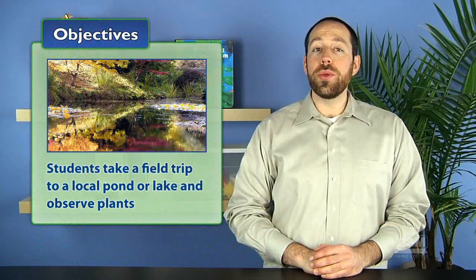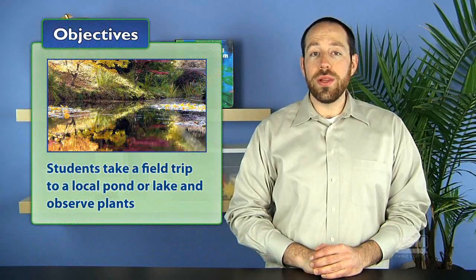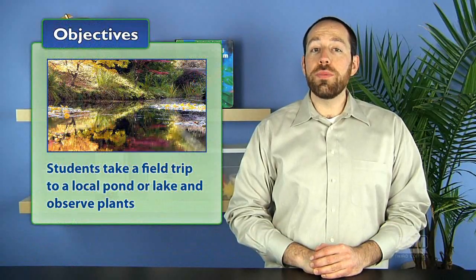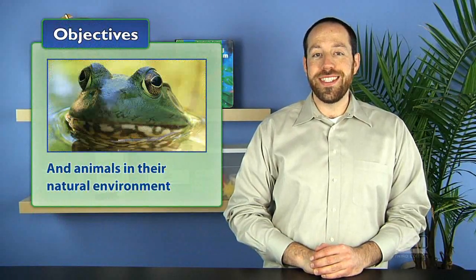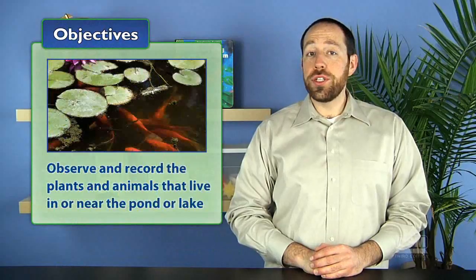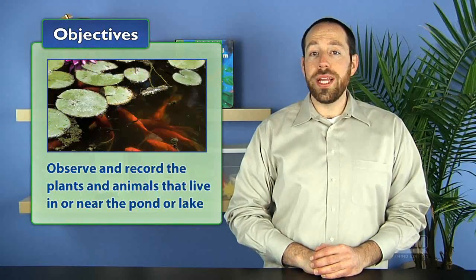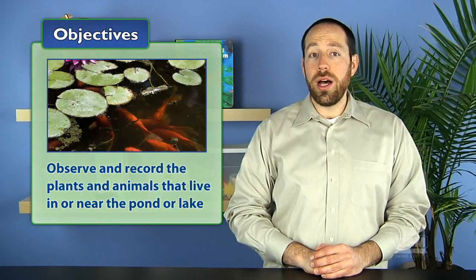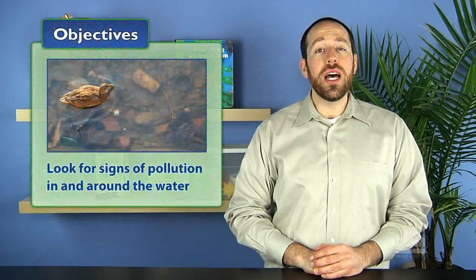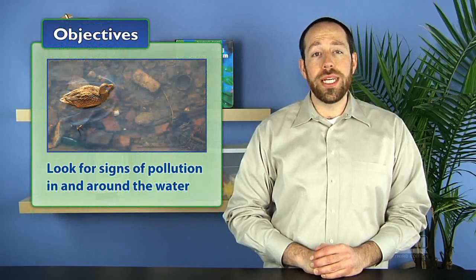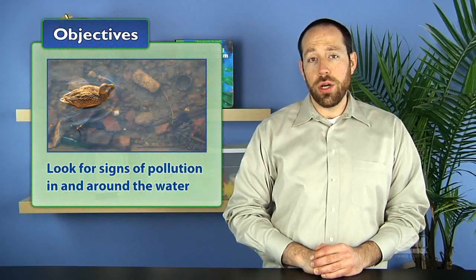In Activity 12, Field Trip to a Pond, students take a field trip to a local pond or lake and observe plants and animals in their natural environment. They observe and record the plants and animals that live in and near the pond or lake, and finally look for signs of pollution in and around the water.